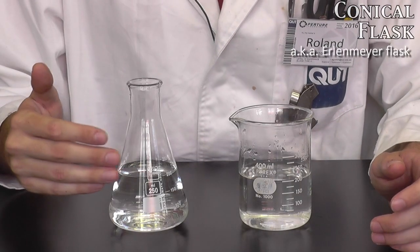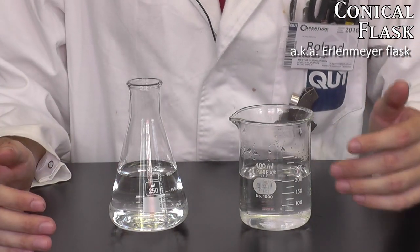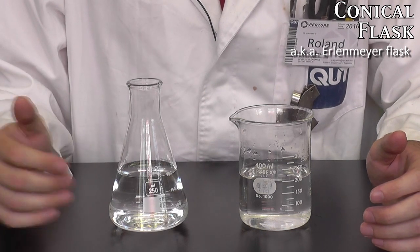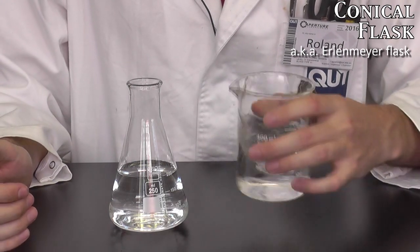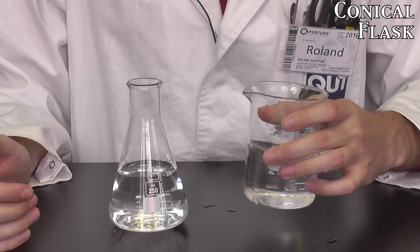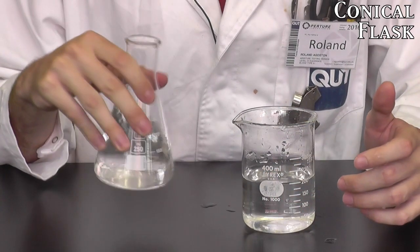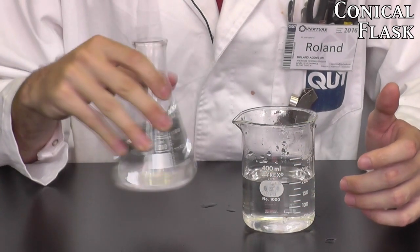Next up we have the conical flask. It serves essentially the same function as the beaker, but because of its shape it has some additional benefits. If I were to swirl the beaker a little too vigorously, it's quite easy to spill. However, swirling the conical flask, because of its shape, resists that same spillage.